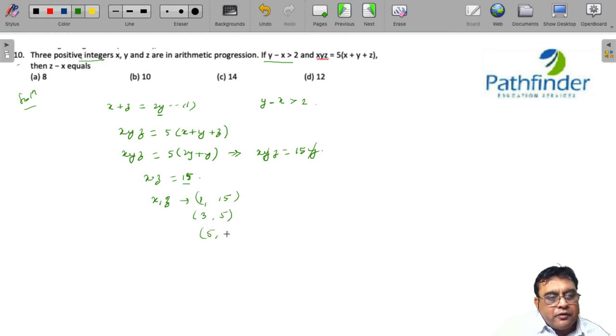We can immediately ignore the last two cases because we are required to calculate z minus x, and since all values are positive, z has to be greater than x.